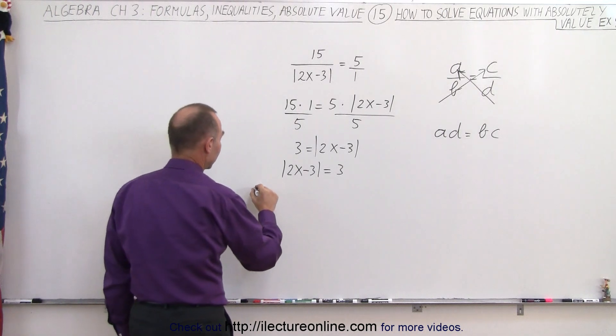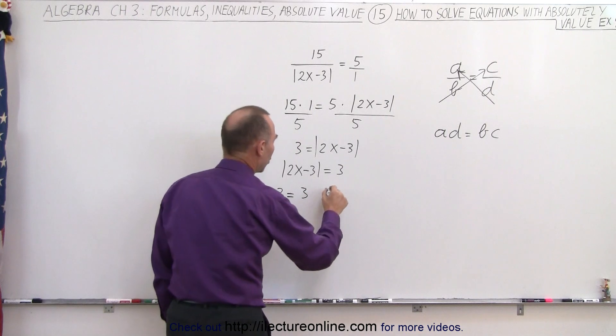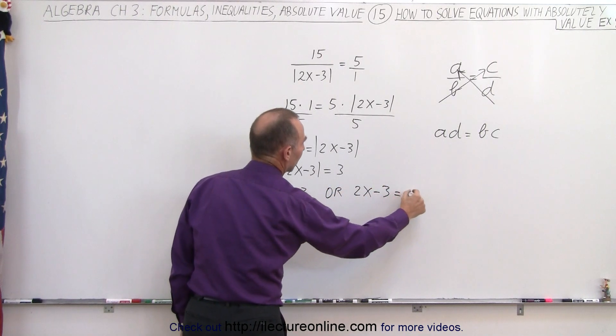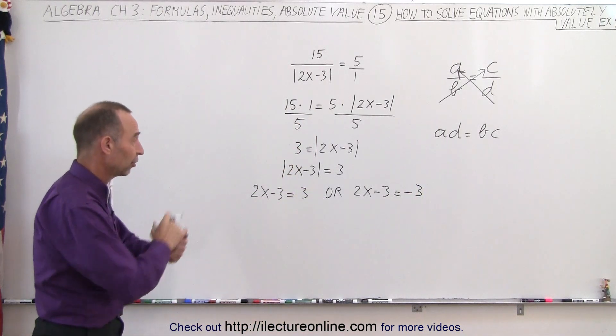We can then write that 2x minus 3 is equal to the positive value of 3, or 2x minus 3 is equal to the negative value of 3. And then we solve those two equations.